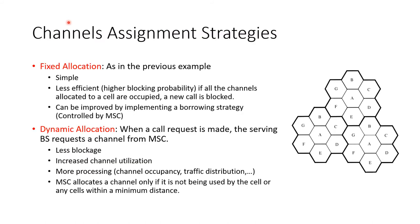There are two channel assignment strategies: fixed allocation and dynamic allocation. In fixed allocation, every cell has a fixed number of channels assigned. It is simpler but less efficient because there is a higher probability of blocking — if all 50 channels allocated to a cell are occupied and another user requests a call, that call will be blocked.